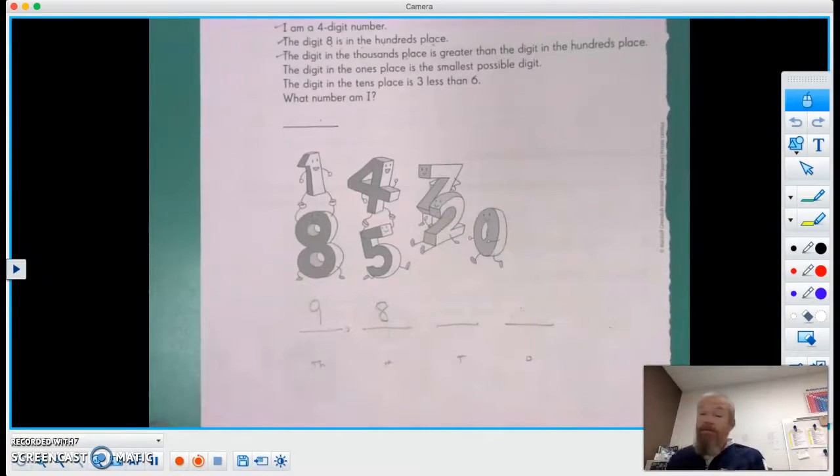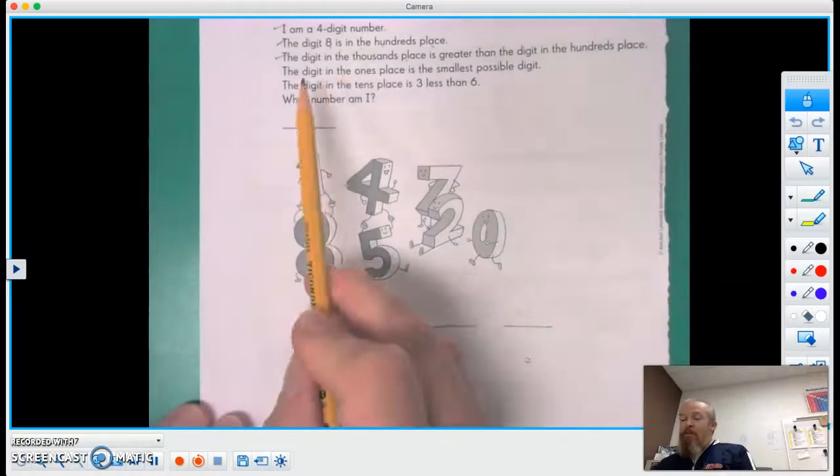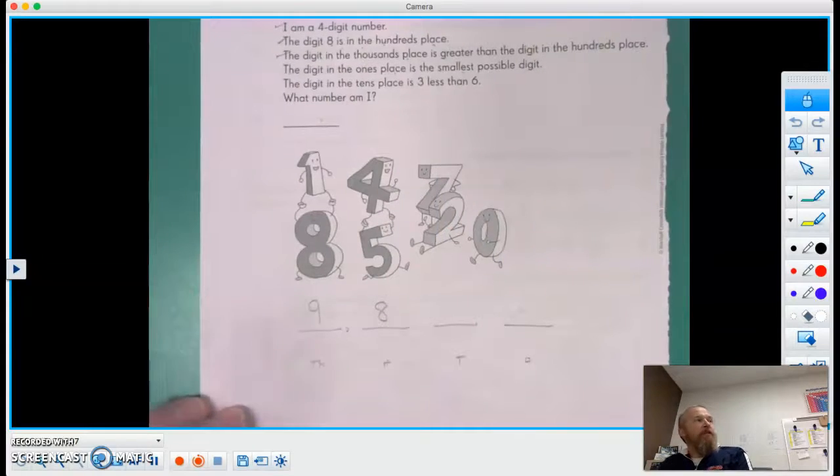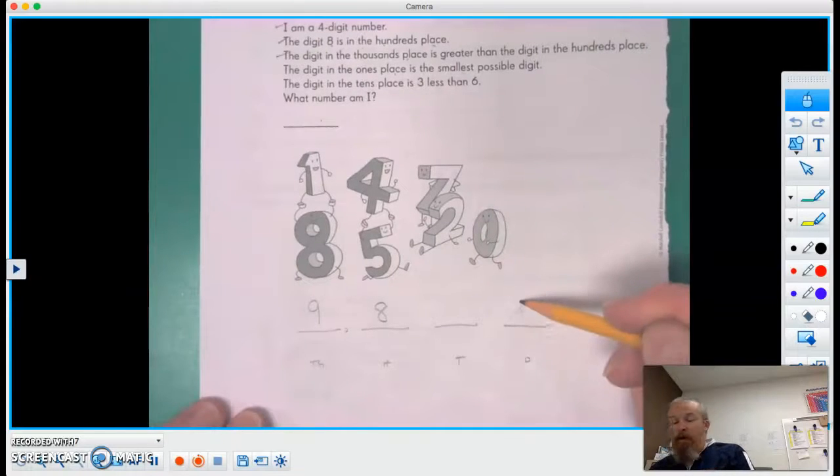Remember, the digit in the ones place is the smallest possible digit. So right away we're thinking one, right? Ah, is zero a digit? Is zero smaller than one? Yeah, zero, my hero.